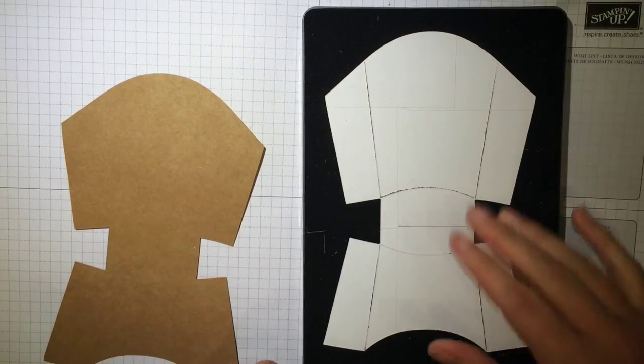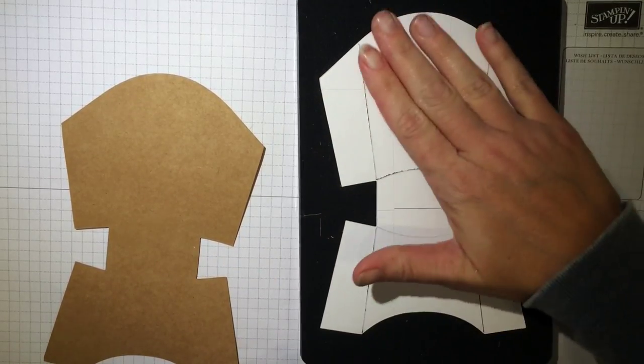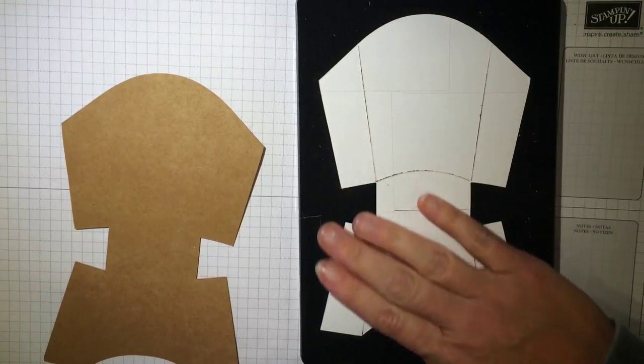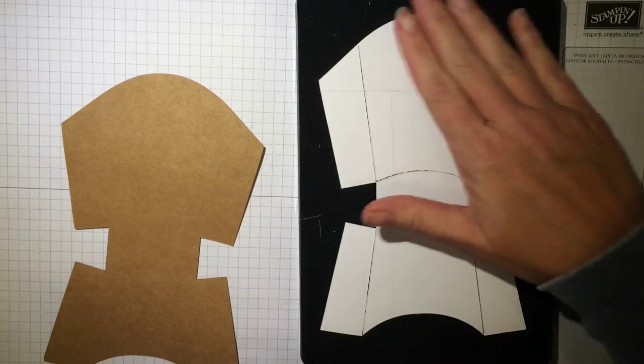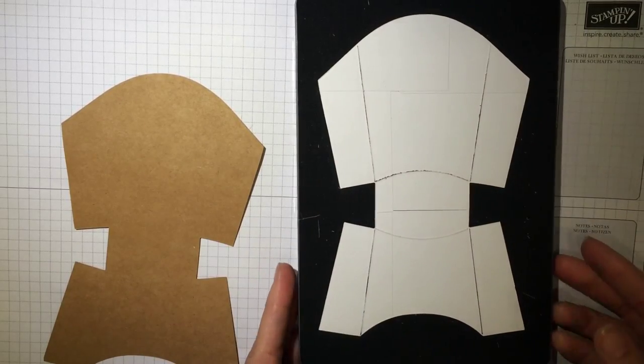Now before I take this away, I want to point out that my die looks like this because I put label stickers on it and cut it and then peel the outside off. It helps for you to make sure that your paper is placed correctly. You can see it much better.